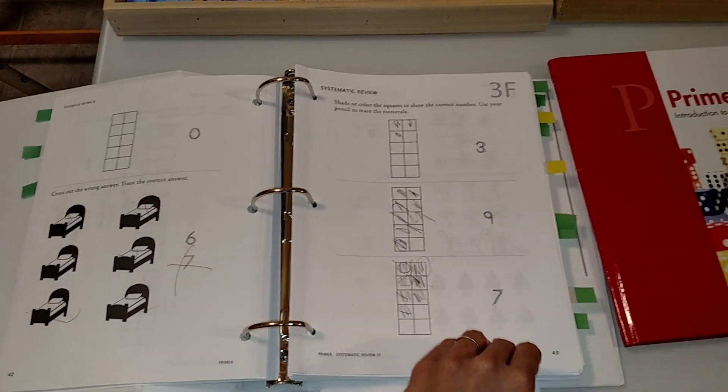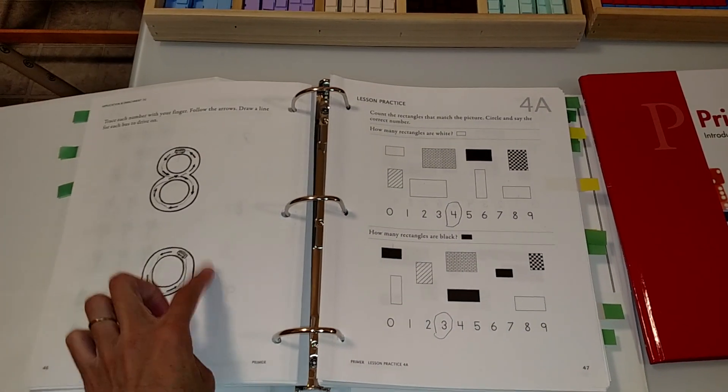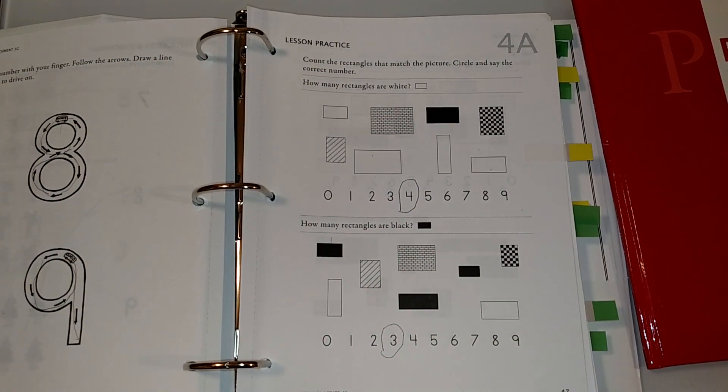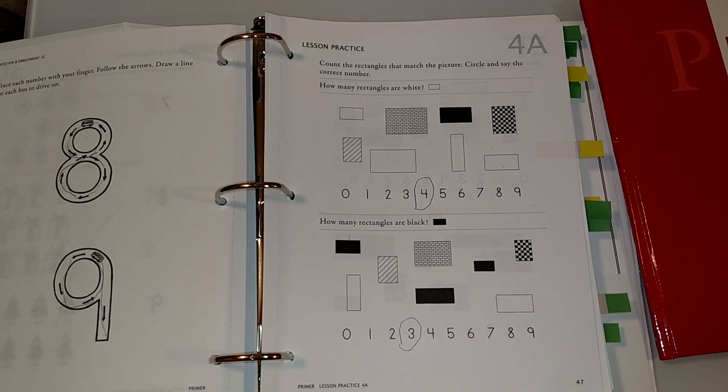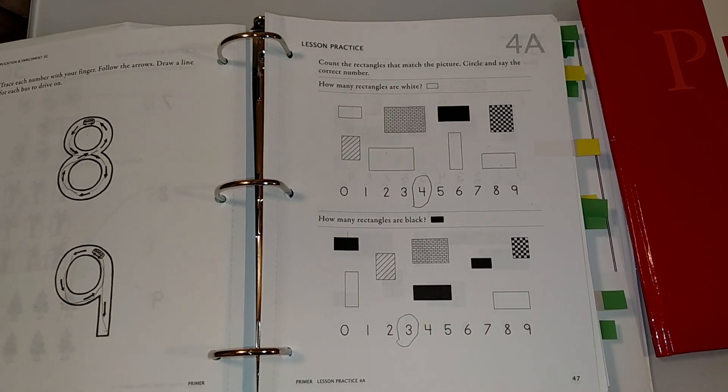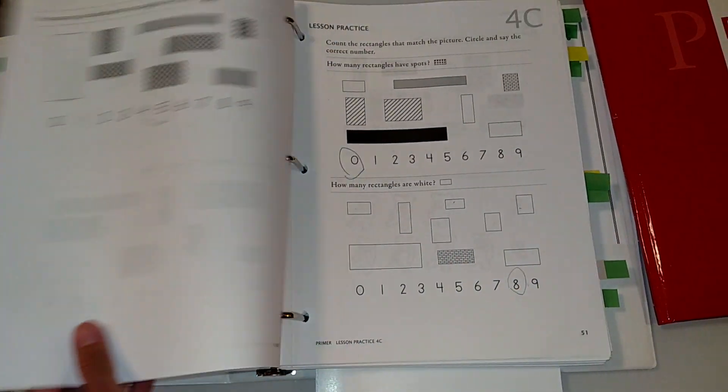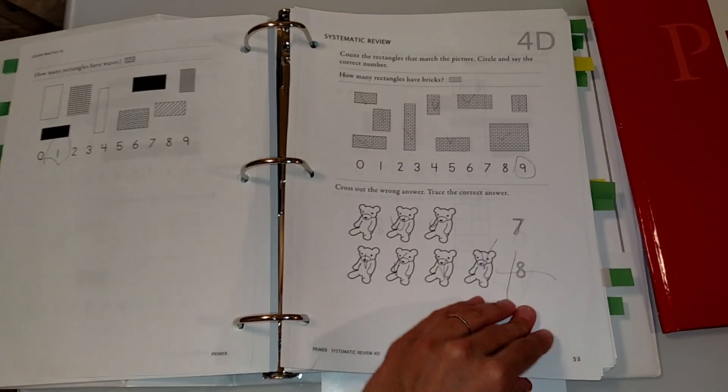So it starts introducing shapes and this is good visual discrimination. It asks the child how many rectangles are white and the child would have to count and circle. Here how many are black. Looking into geometry.